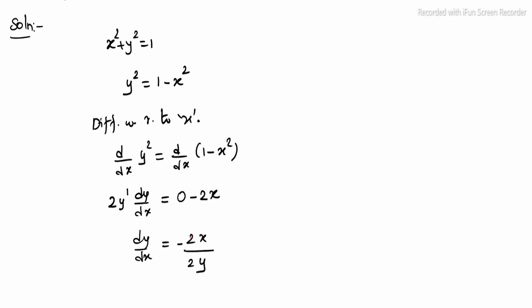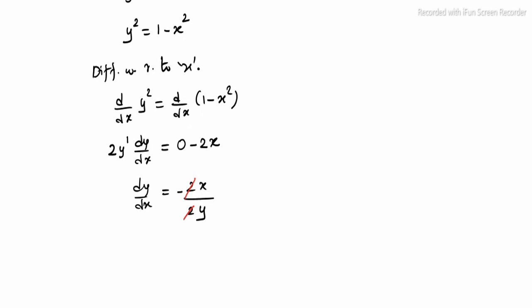Anyway, in the place la, the 2 and 2 will cancel. Left out, namak in the dy by dx is equal to minus of x by y.